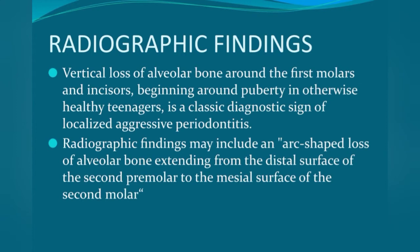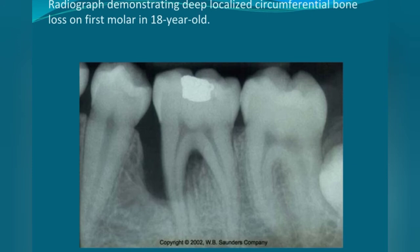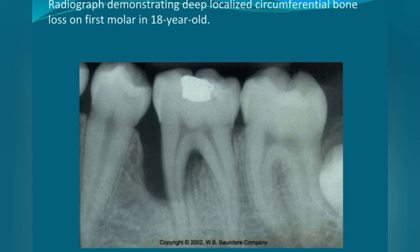Regarding radiographic findings, vertical loss of alveolar bone around the first molars and incisors beginning around puberty in otherwise healthy teenagers is a classic diagnostic sign of localized aggressive periodontitis. An arc-shaped loss of alveolar bone extending from the distal surface of the second molar to the mesial surface of the premolar can be seen. Angular bone loss in the molar and incisor regions is a classic presentation.